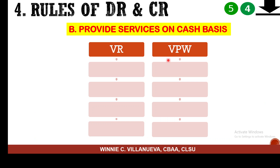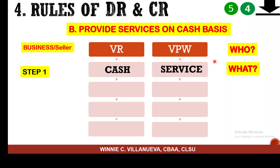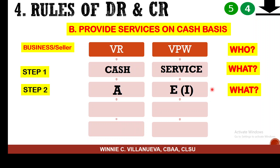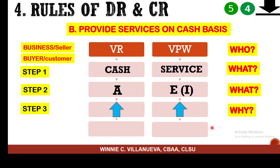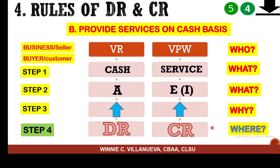Our next sample is providing services on a cash basis. The business is the seller — you receive money and give up your service. You now have income. Every time your asset and equity increase, that's debit and credit.